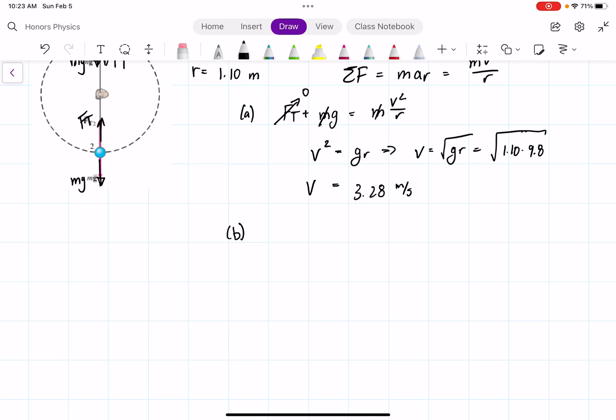And the force of tension is in the opposite direction as gravity. So when we write out net force equals MV squared over R, we get the force of tension, because it's in the same direction as the acceleration, minus MG, equal to MV squared over R.